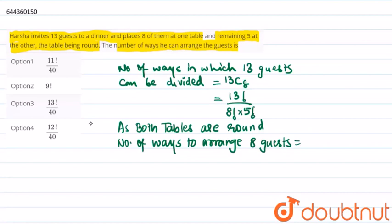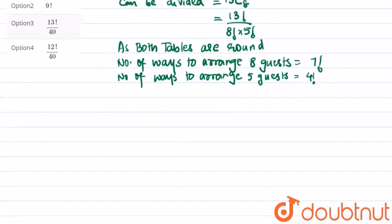equals 8 minus 1, that is 7 factorial. Similarly, the number of ways to arrange 5 guests on a different table equals 5 minus 1, that is 4 factorial.